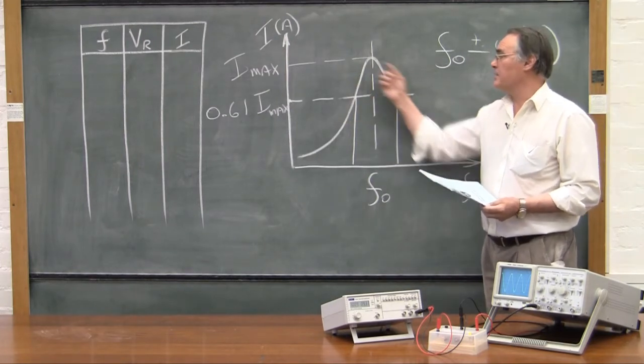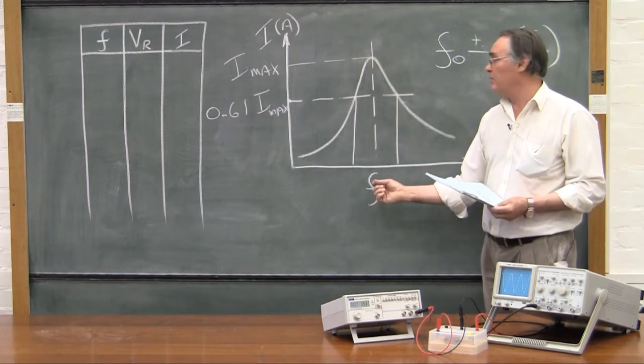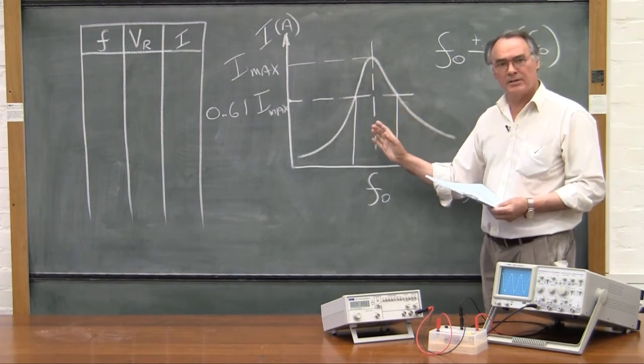Now, remember that a Gaussian is symmetric around the central point, the mean point. But you'll find that from your graph, this is clearly not a symmetric curve.